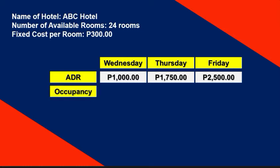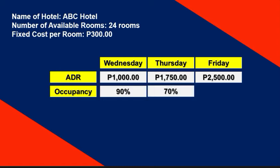Now let's look at the occupancy rate, remembering we have 24 rooms. On Wednesday, since the price offered was low, occupancy is almost full at 90%. On Thursday, since the room rate or ADR is higher, occupancy drops to around 70% — so about 17 rooms. On Friday, the rooms are pricey but demand is moderate, so we have 50% of rooms being occupied, meaning 12 rooms.